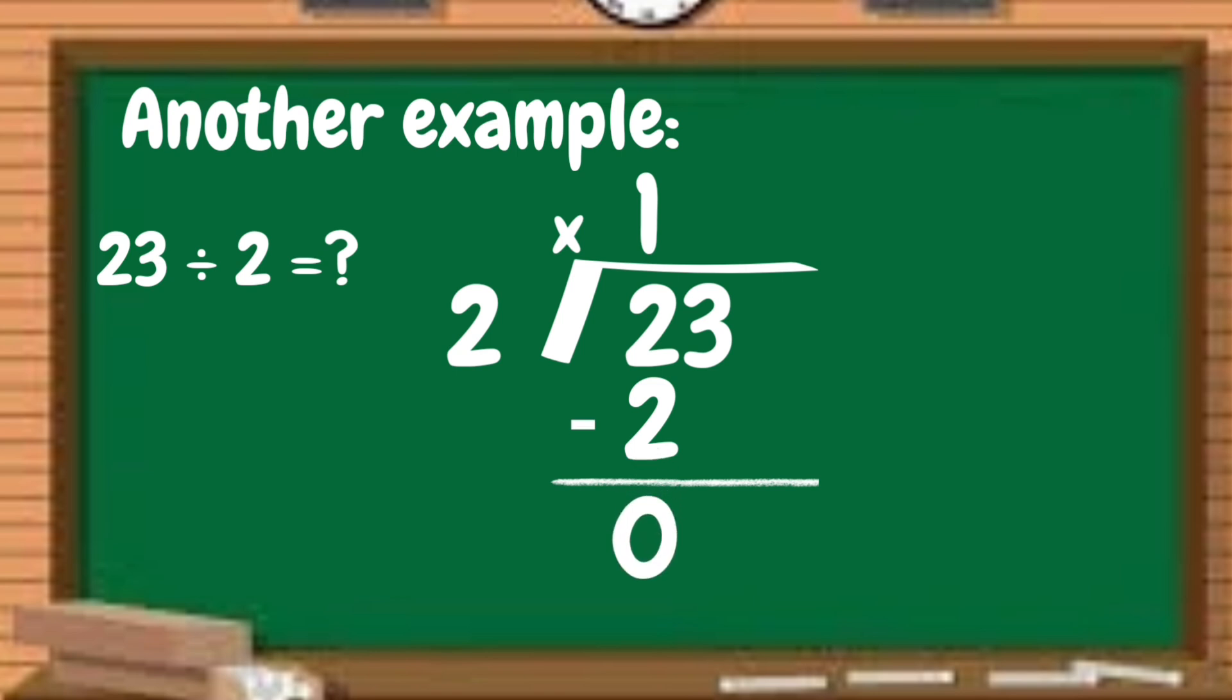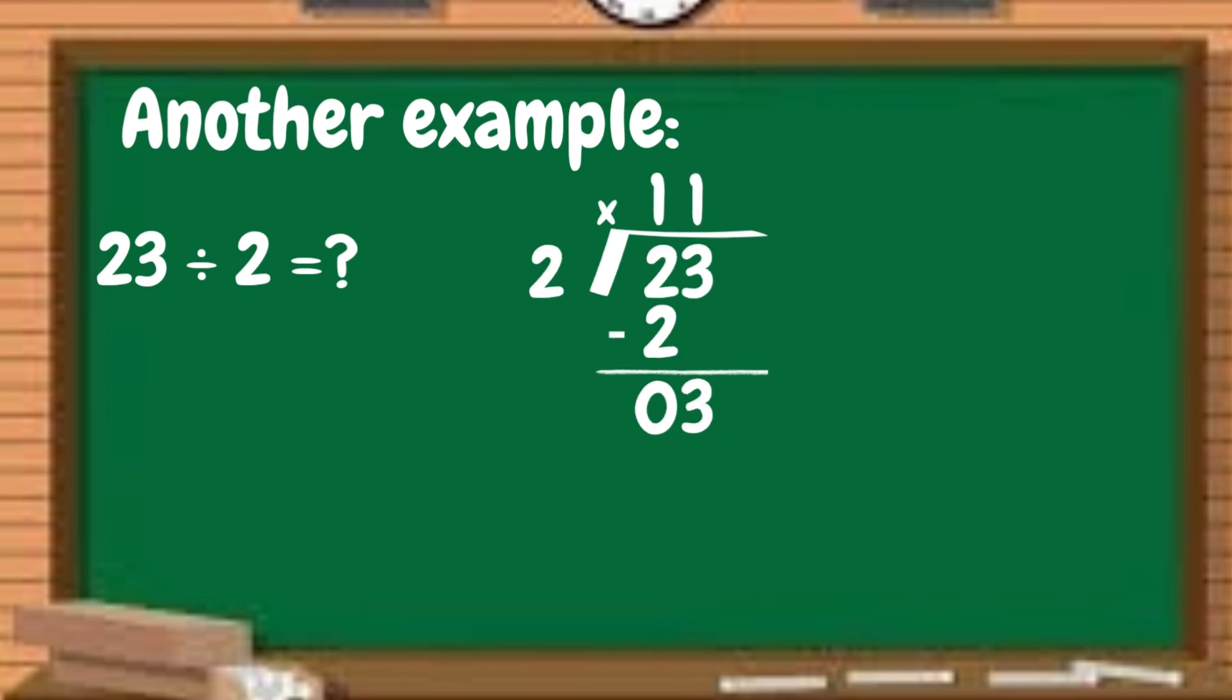Since we still have remaining digit, we have to bring it down beside the 0. Then divided by 2. The answer is 1. 1 times 2 is 2. Again, we have to subtract. 3 minus 2 is 1. So our answer is 11 remainder 1.